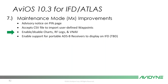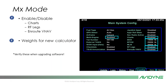Enabling and disabling charts, RF legs, and VNAV in maintenance mode: in your new 10.3 maintenance mode config page, you can enable or disable charts — if you don't subscribe to a Jeppesen chart database, shut it off to avoid the expired charts alerts. You can enable or disable RF legs depending on your other aircraft equipment, and enable or disable en-route VNAV. Make sure you verify these settings when upgrading to 10.3 — dealers, make sure you check that out.